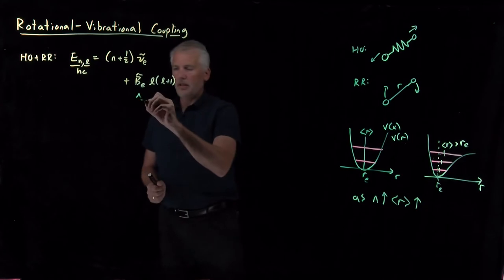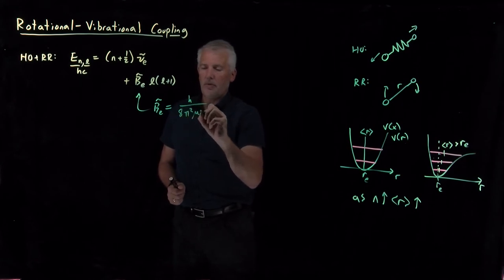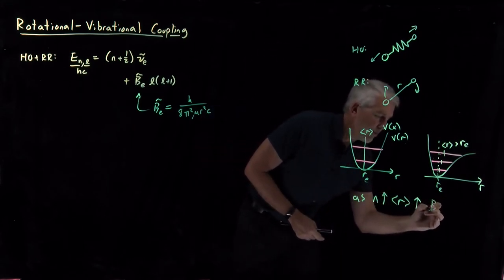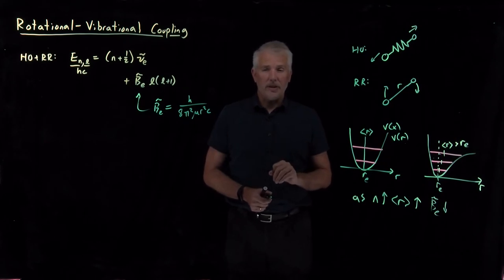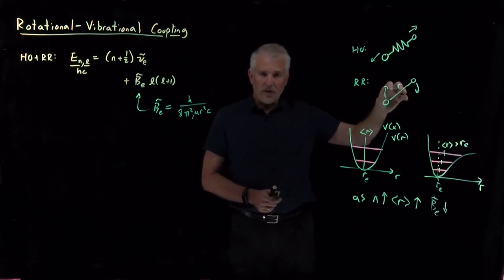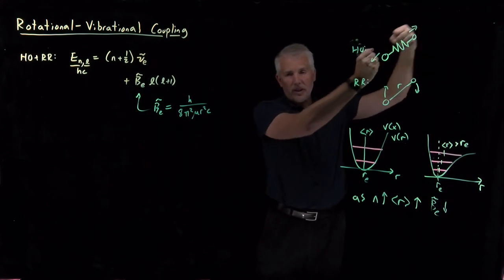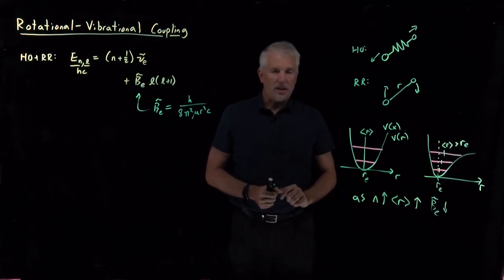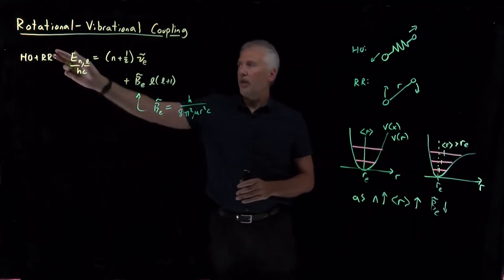Because the rotational constant has R in its denominator — h over 8π² μR²c — as the average bond length increases, the rotational constant decreases. Notice this decrease is for a different reason than the centrifugal distortion correction. Both involve the bond length increasing, but centrifugal distortion occurs because faster rotation stretches the bond, whereas here, higher vibrational excitation increases the average bond length. These are two different causes for the rotational constant to decrease.